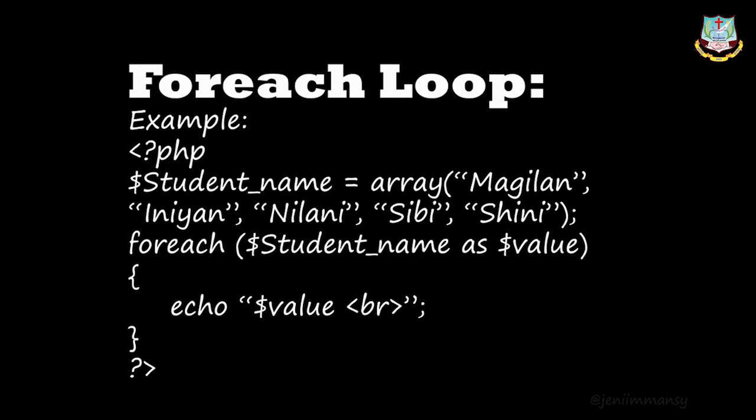For the for-each loop, we will see one example. First, we open the PHP tag and then: studentname = array of Magli, Nini, Nalini, Nilani, Sibi, Shini — some names are given as an array. Then we write the for-each loop: foreach(studentname as value). Inside the bracket, we write whatever statements have to be displayed or executed. Then the PHP code is closed.